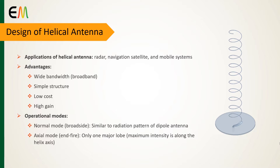In the normal mode of operation, the field radiated by the antenna is maximum in a plane normal to the helix axis and minimum along its axis. The pattern is similar in shape to that of a small dipole or circular loop.